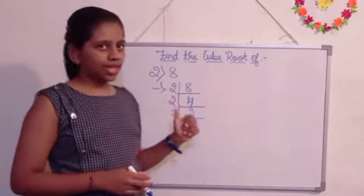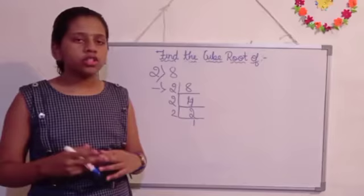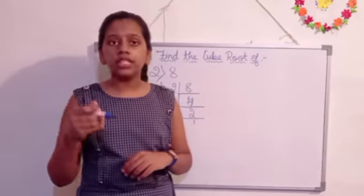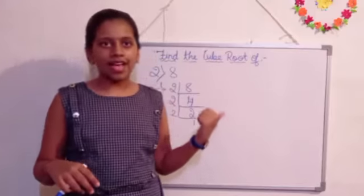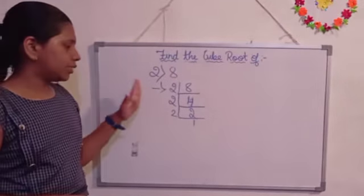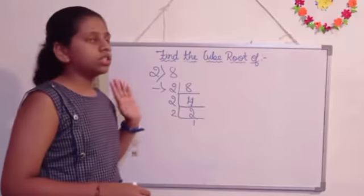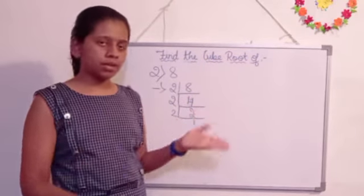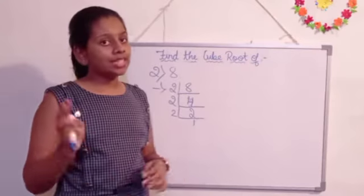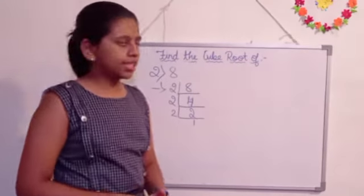As it is we are going to take 2. Cube numbers means the number which is multiplied by itself 3 times. Then, only it is considered as the cube number. We are going to take 2. There are 3, 2's are there. Then it is considered as the cube number. Why? Because the 2 is multiplied by 3 times by itself.